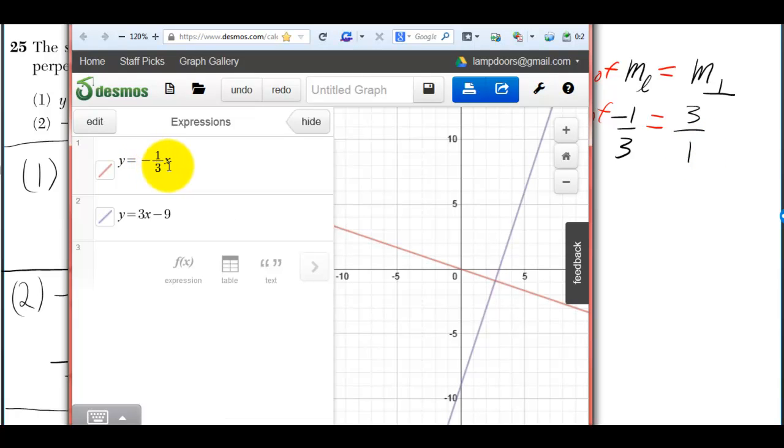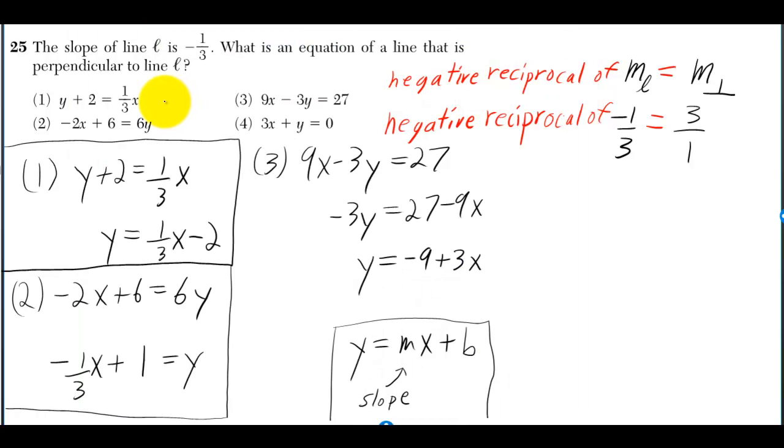Y equals negative 1 over 3x has slope negative 1 over 3. If something has slope 3 over 1, in other words 3, then they're going to be perpendicular. To find the slope for any of these equations without graphing, you can solve for y and put it in y equals mx plus b form.